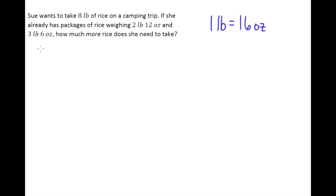With all the information they give us, this seems like a two-step problem. If I need to know how much more rice she needs to take, I probably need to figure out first how much she actually has now, and that would involve finding the total of three pounds six ounces and two pounds twelve ounces.